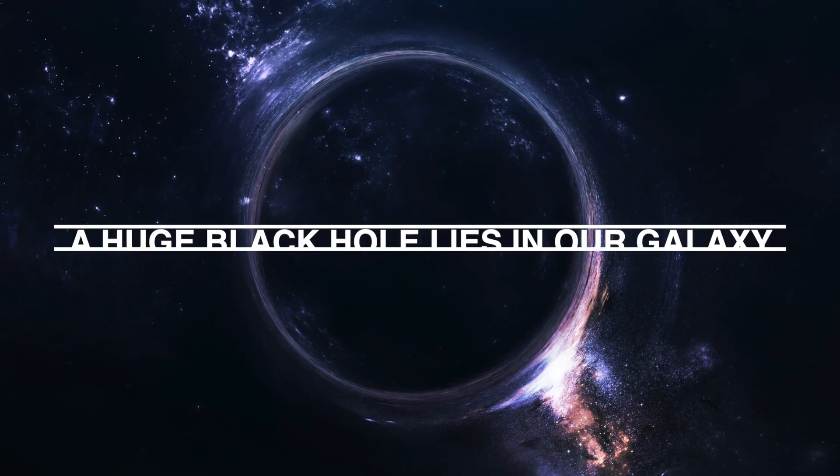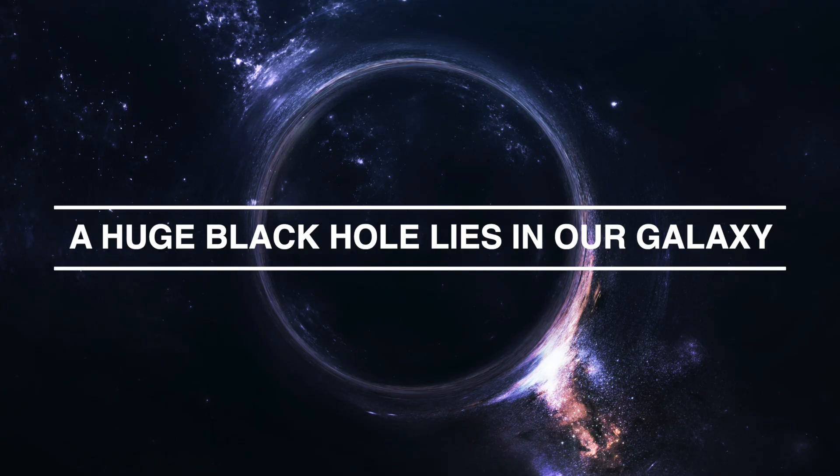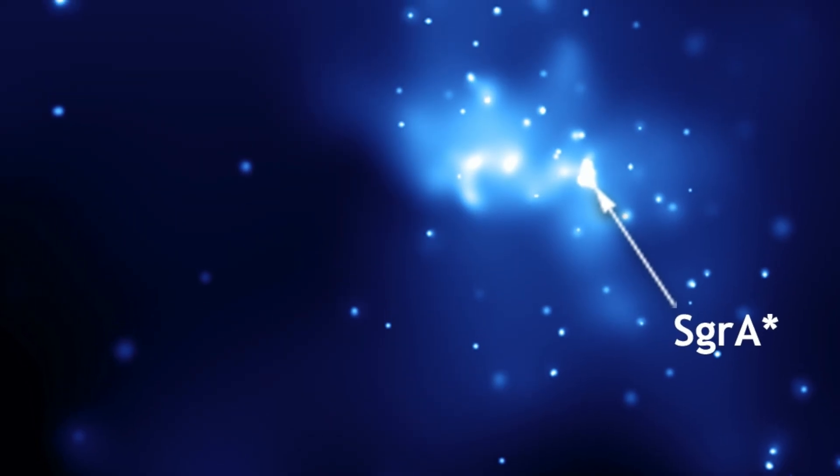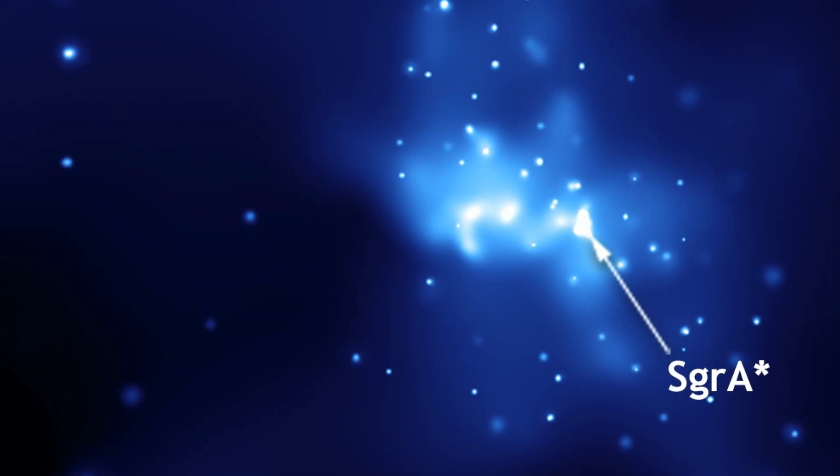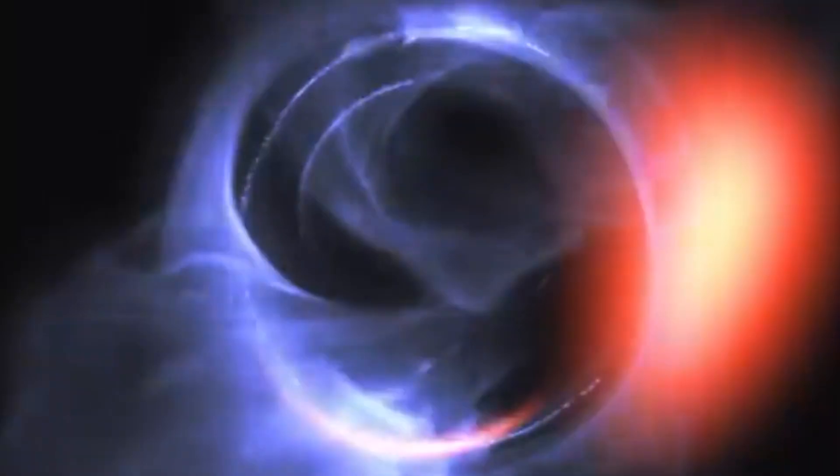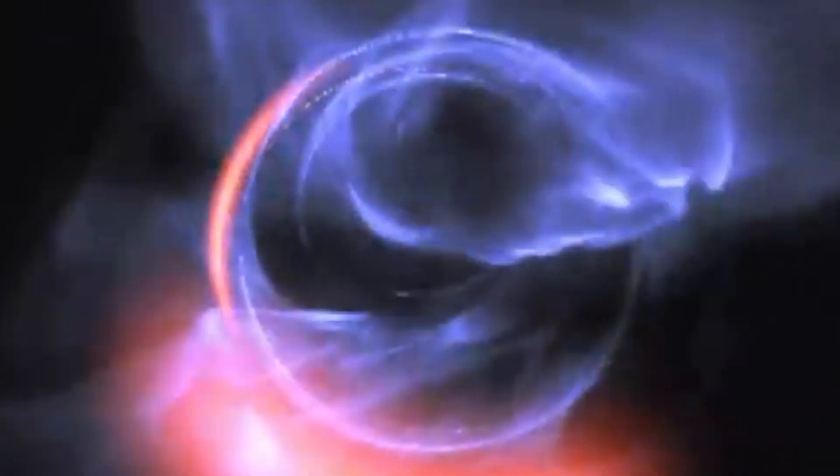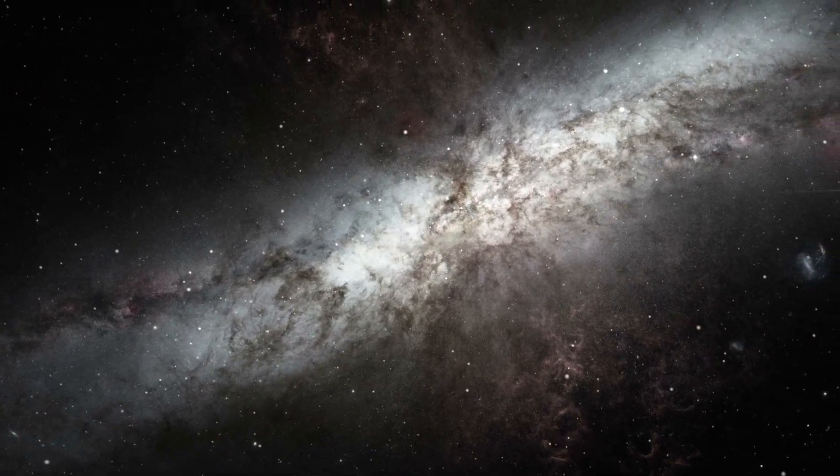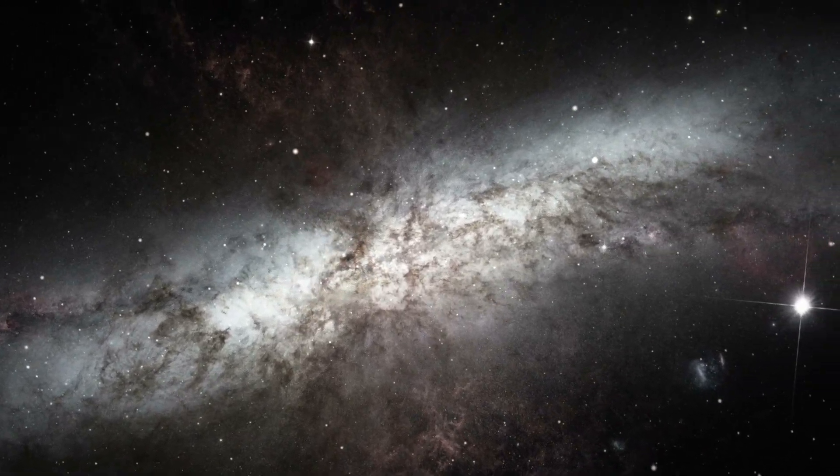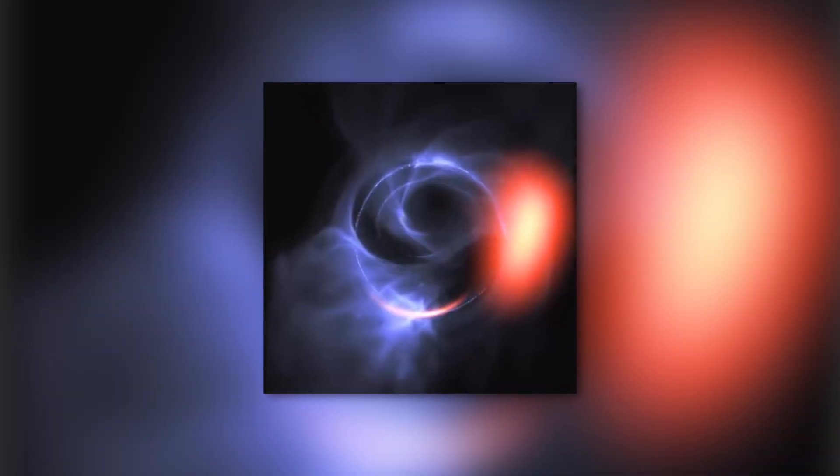A huge black hole lies in our galaxy. Sagittarius A star, which is located at the center of the Milky Way, is a giant black hole whose mass is about 4 million times larger than that of our Sun. This object has never been observed directly. It is hidden by the thick clouds of dust and gas. But astronomers have been able to observe the orbits of stars and clouds near the center of the galaxy and thus calculate the mass of this hidden cosmic giant.